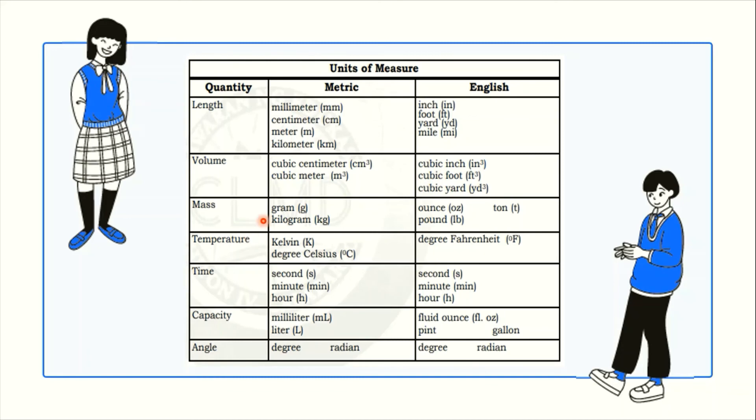For mass, sinusukat natin niya ito yung mga units of measurement natin. Ito naman sa English. Temperature, ito yung ating unit of measure. For time, papansin natin na pareho yung ating unit of measure for both metric and English system. Capacity, more on liter kapag metric. Ito naman sa English. And for angle naman, pareho lang naman na degree and region yung ginagamit natin for both metric and English system.